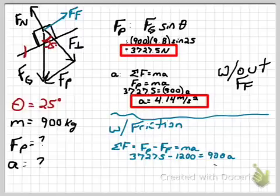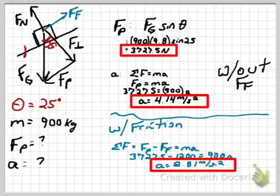We have the pulling force, they gave us the friction force of 1,200 Newtons, and the mass of the polar bear hasn't changed — that's still 900 kilograms. This time our acceleration is going to be 2.81 meters per second squared. It should make sense that our acceleration is less than how quickly we would accelerate down the incline if there was no friction.